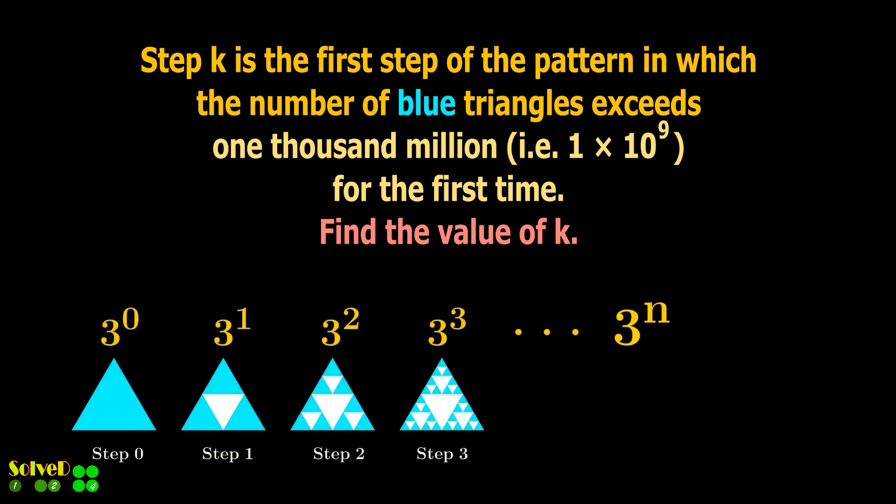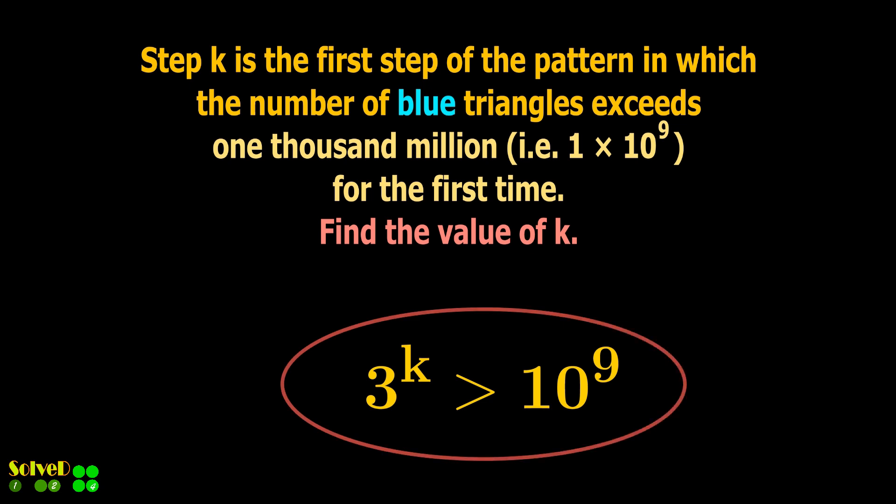We know the number of blue triangles in step K is 3 to the power K. Set this greater than the given value, as stated. So the problem becomes solving this inequality to find the value of K.